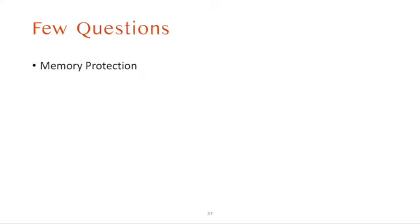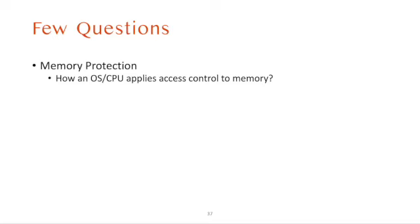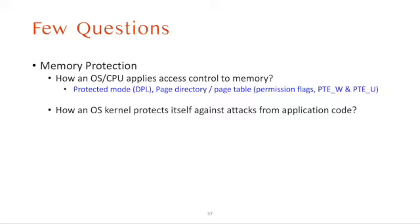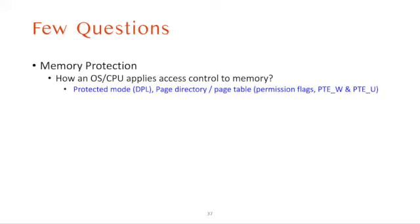Let's go over some questions to make you feel more confident about quiz 2. First: how does an OS or CPU apply access control to the virtual memory system? The answer is through setting memory permissions in the segmentation data privilege level (DPL), or page directory and page table entries. We can set permission flags such as PTE_W and PTE_U, and these will be enforced whenever the CPU accesses the address — that's how we apply access control to memory.